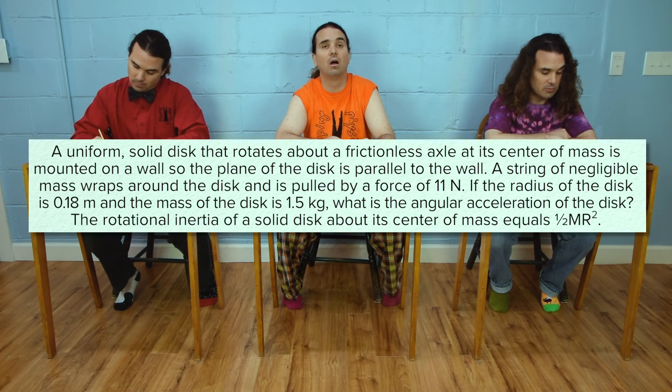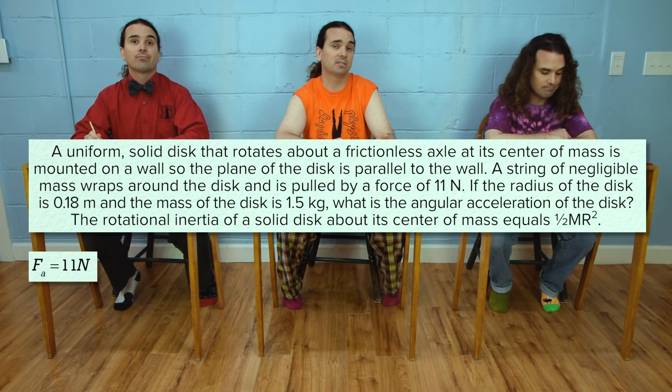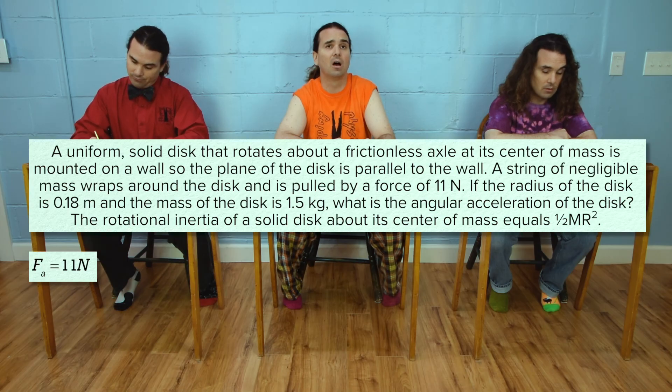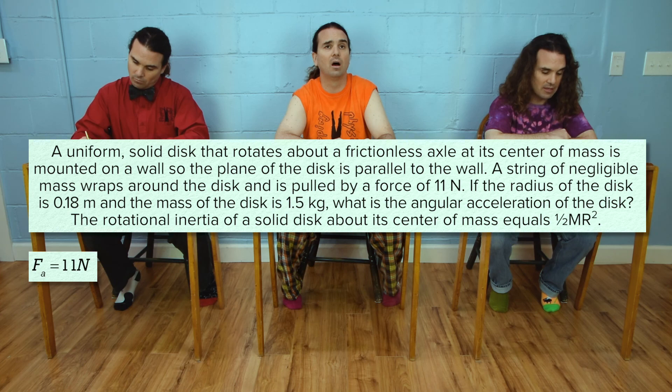A string of negligible mass wraps around the disk and is pulled by a force of 11 newtons. Force applied is 11 newtons. If the radius of the disk is 0.18 meters and the mass of the disk is 1.5 kilograms, what is the angular acceleration of the disk?